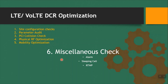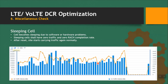Now we are coming to the miscellaneous checks. We have to verify there are no alarms in your source site as well as the neighbor site. Next, the cell should not be a sleeping cell, and there should be no RTWP issue. In sleeping cells, cell availability will be 100% but traffic will be zero. This problem comes due to software or hardware issues, and can be resolved after a site reset. Once we reset the site, it starts taking traffic again.